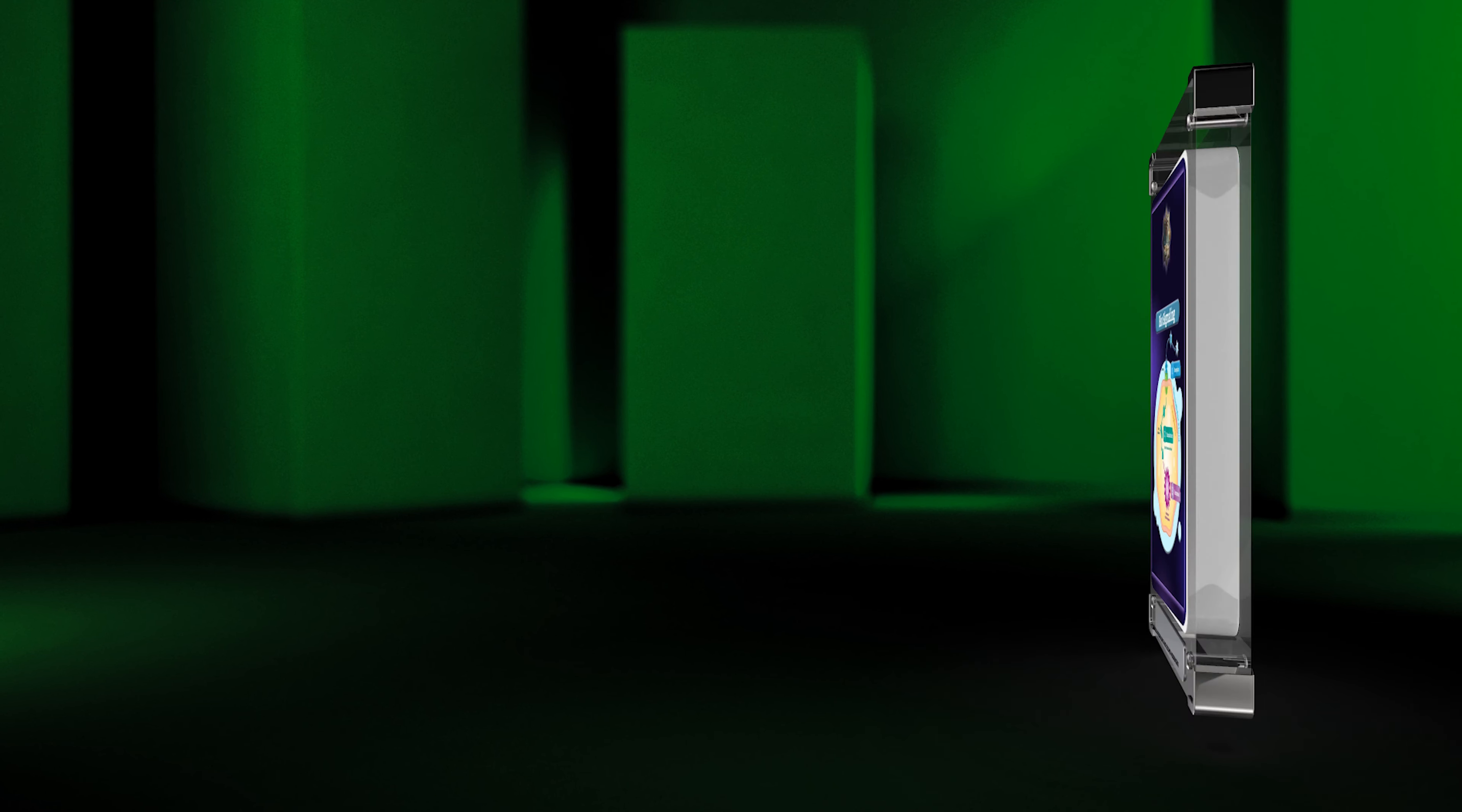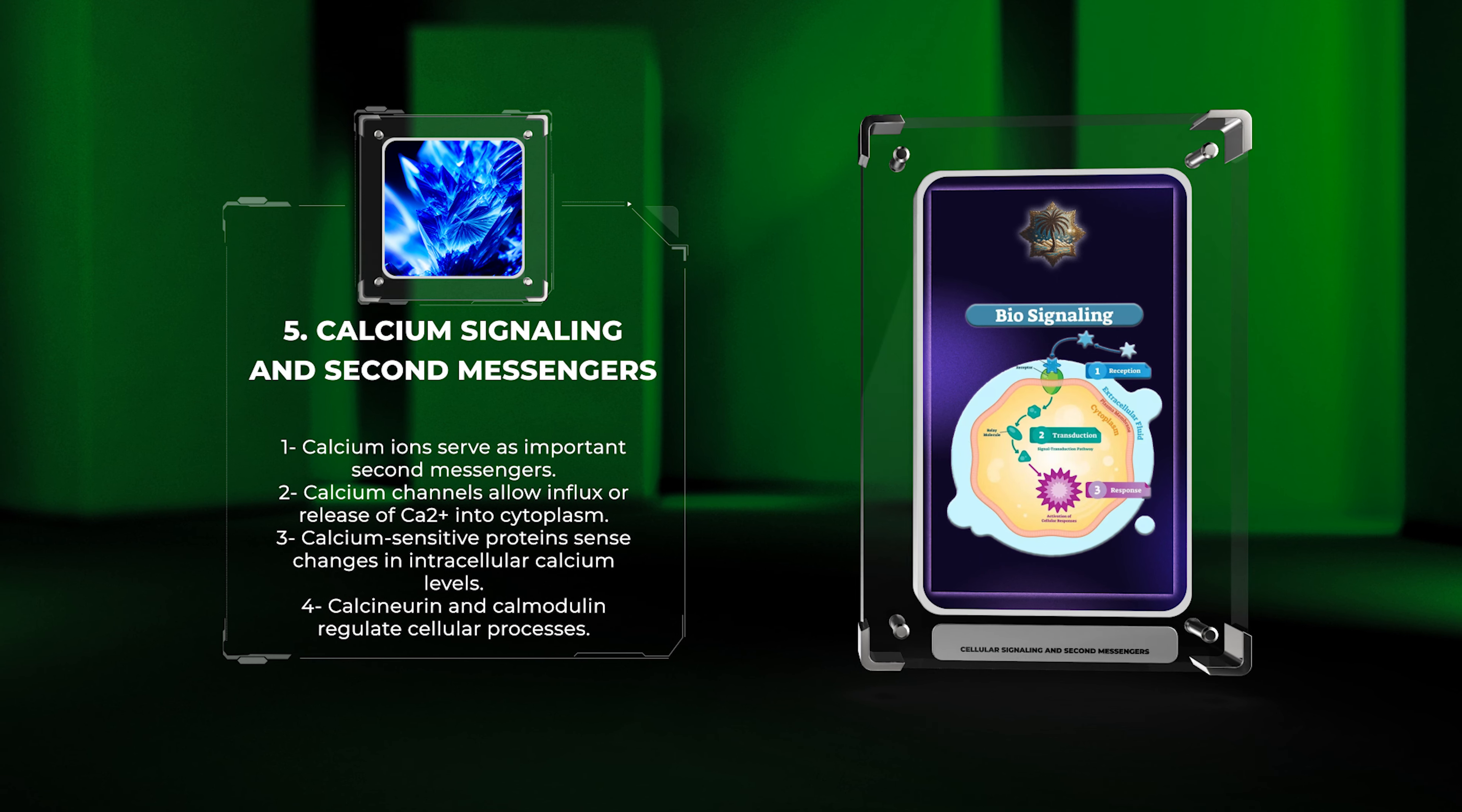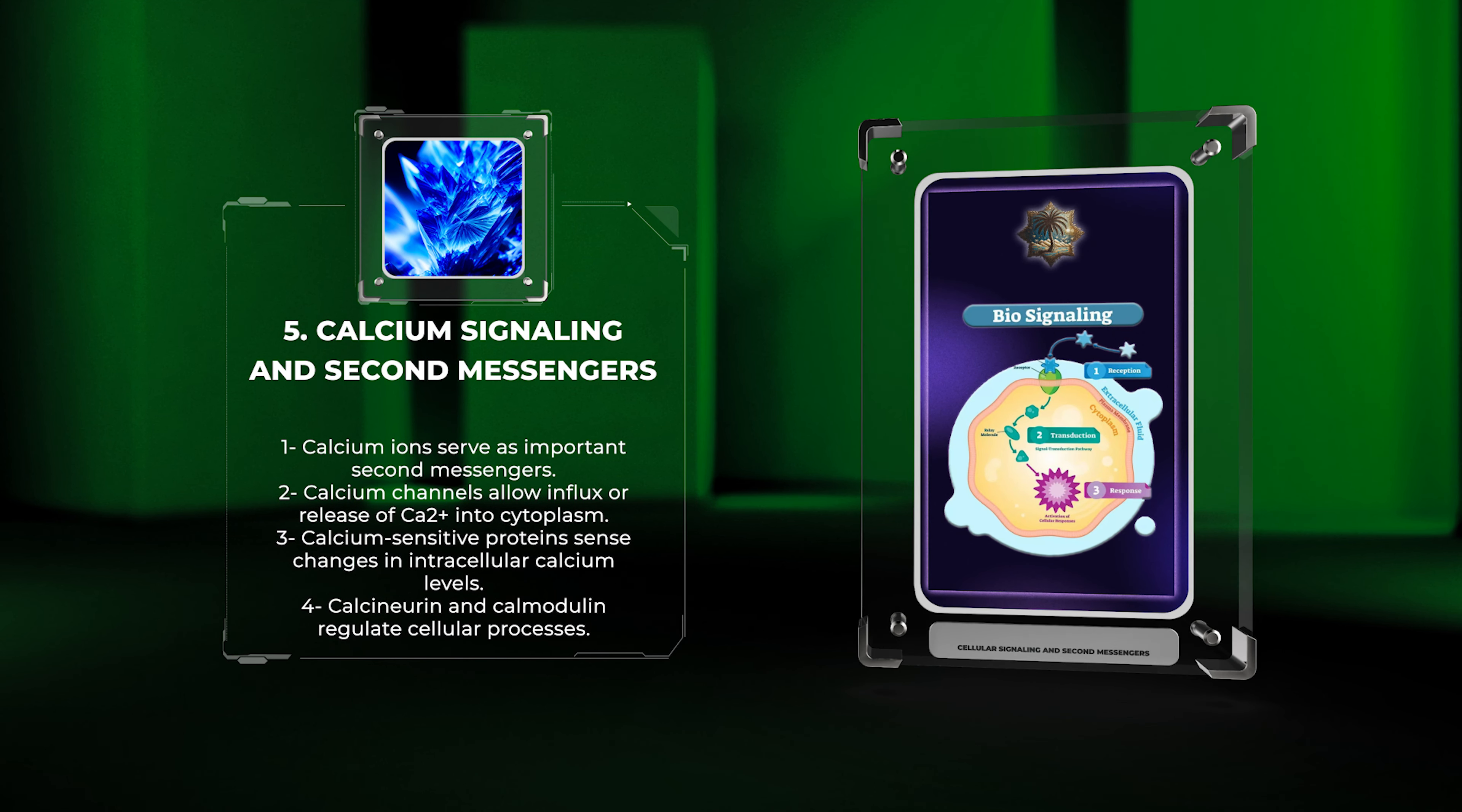In addition to the phosphoinositide signaling pathway, calcium ions, Ca2+, also serve as important second messengers in cell signaling. Calcium channels, controlled through various mechanisms, allow the influx or release of Ca2+ into the cytoplasm. Calcium-sensitive proteins, such as calmodulin and calcineurin, sense these changes in intracellular calcium levels and regulate multiple cellular processes, including muscle contraction, neurotransmitter release, and gene expression.